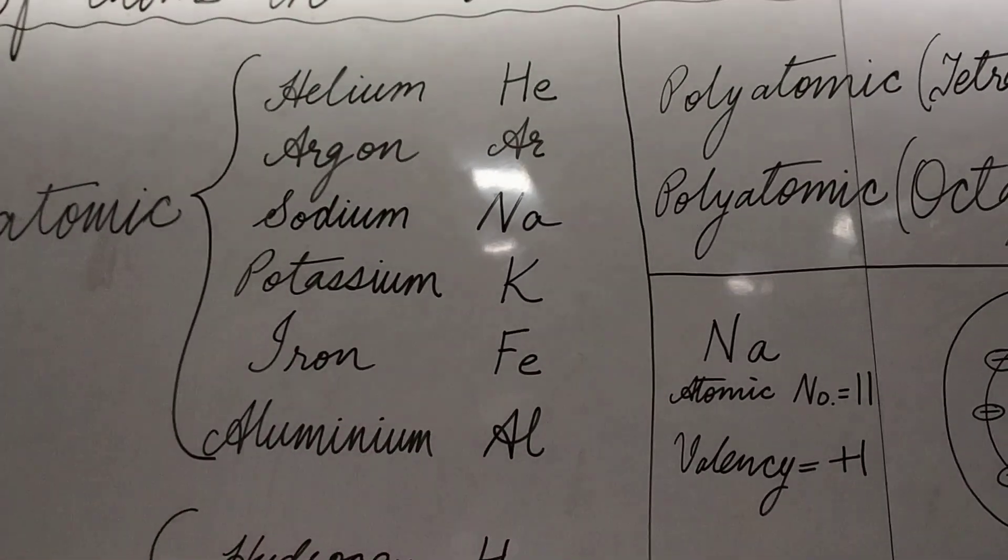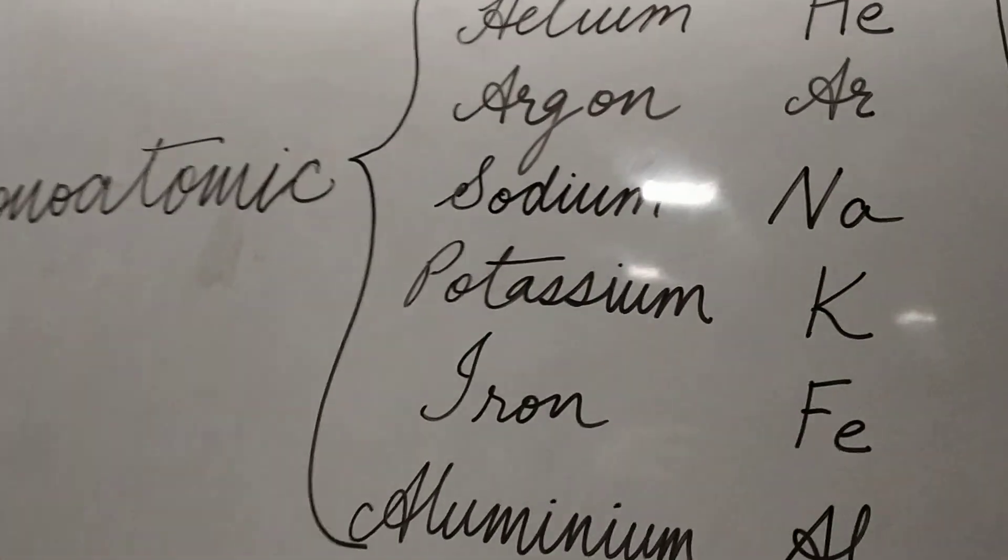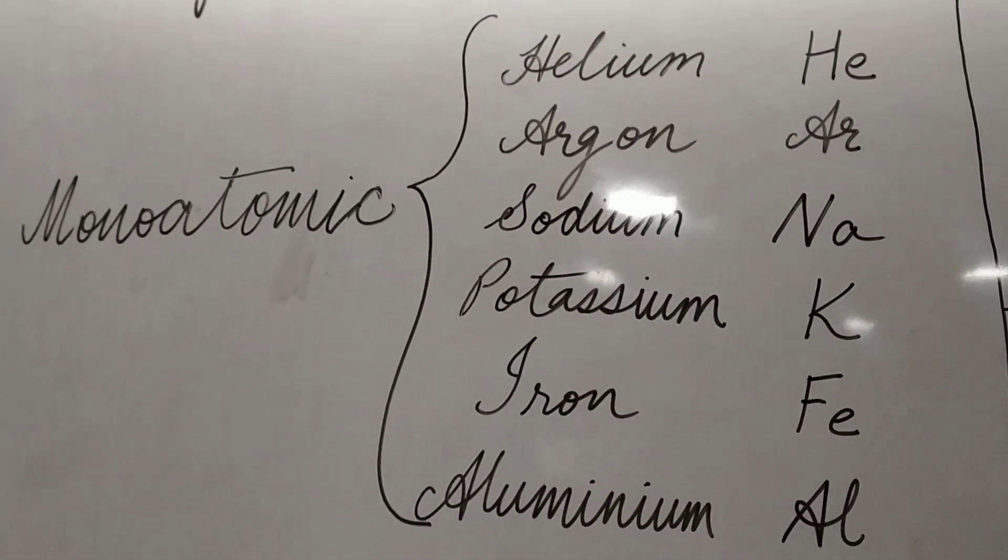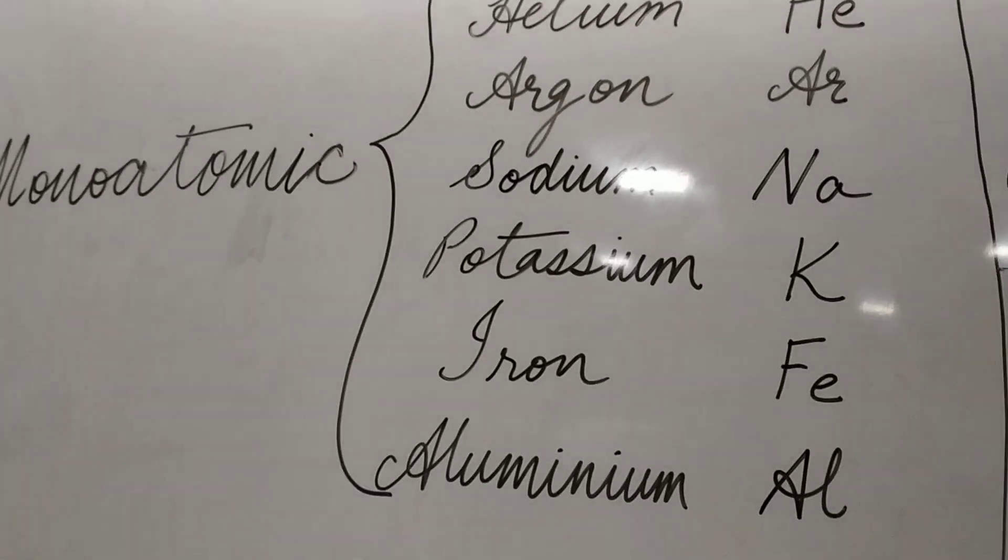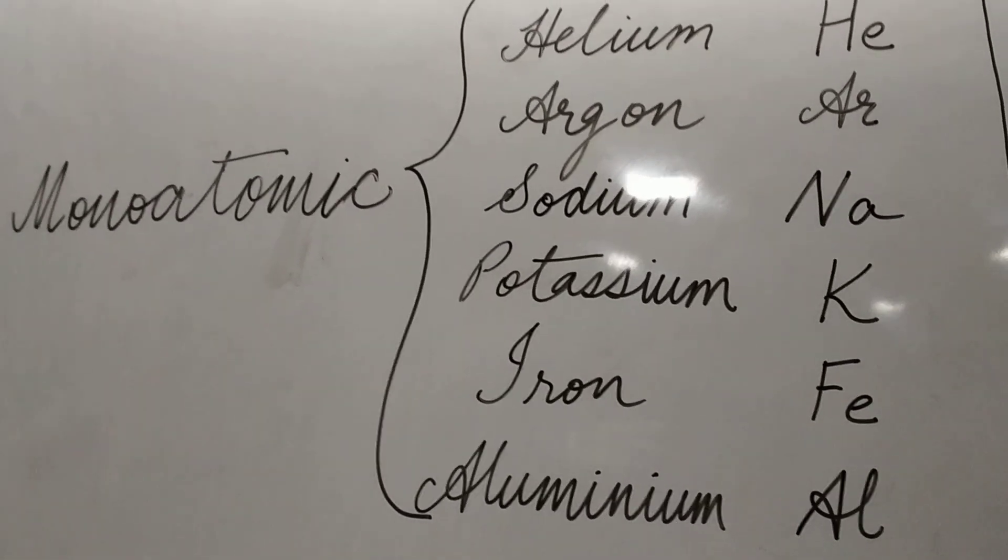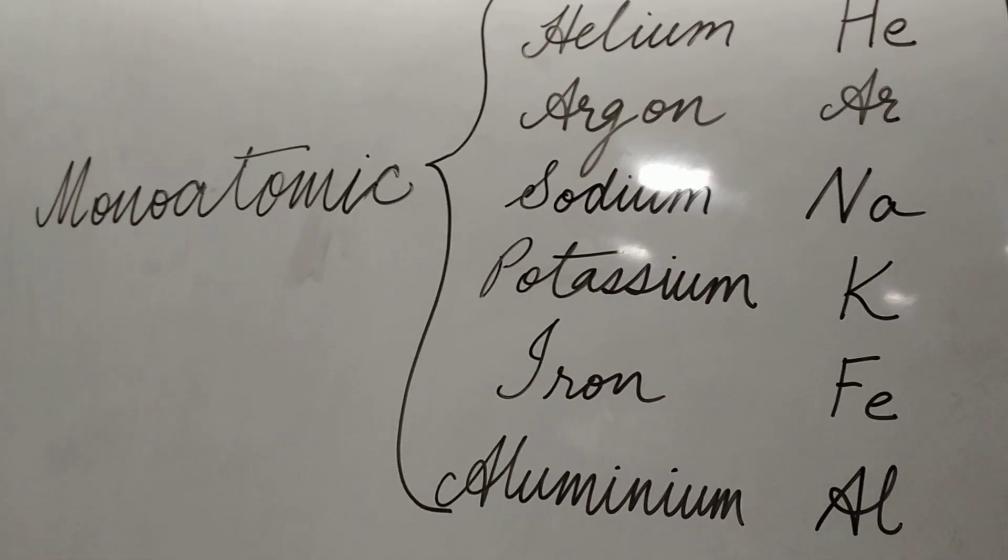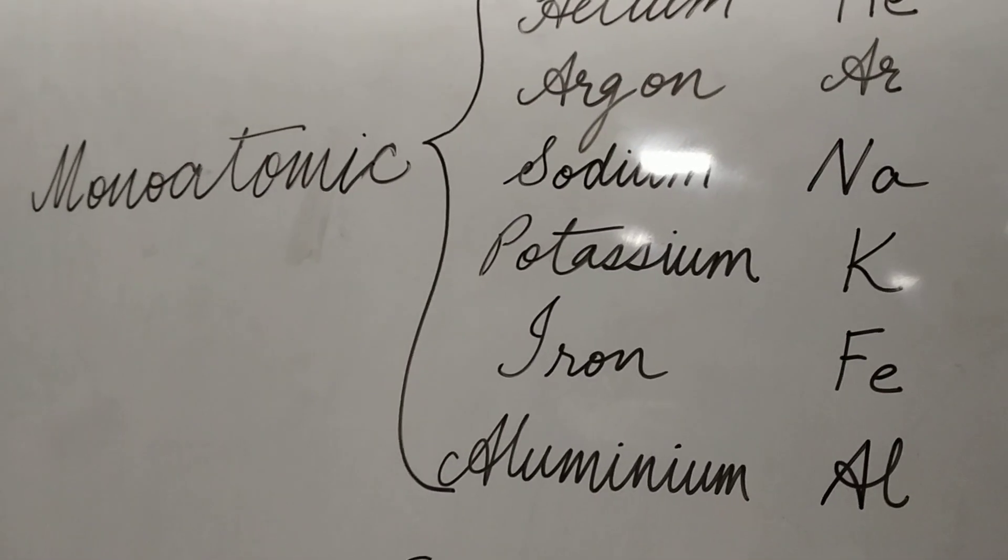Let us take certain examples to understand it better. You have monoatomic molecules, that means there is only one atom in its molecule. The examples are helium, argon, sodium, potassium, iron and aluminium. They do not have two atoms in order to form a molecule.